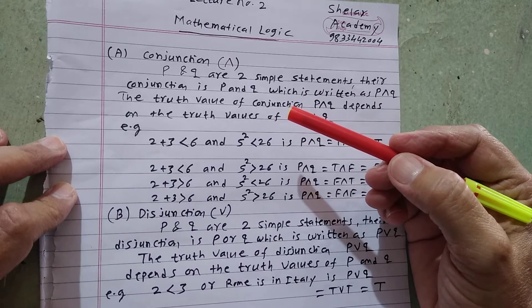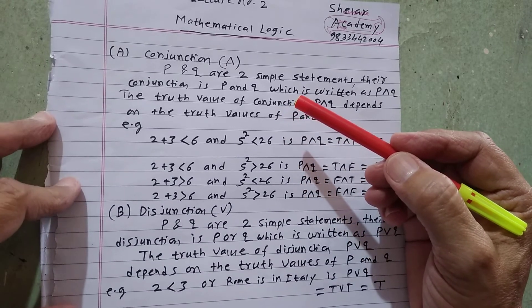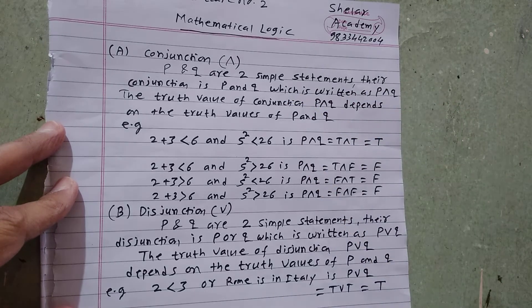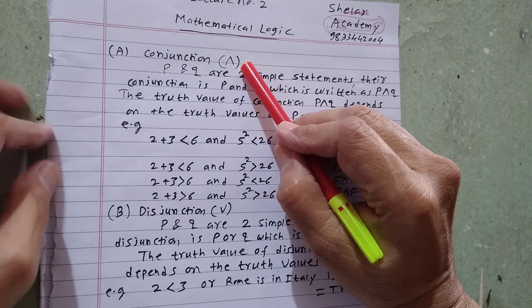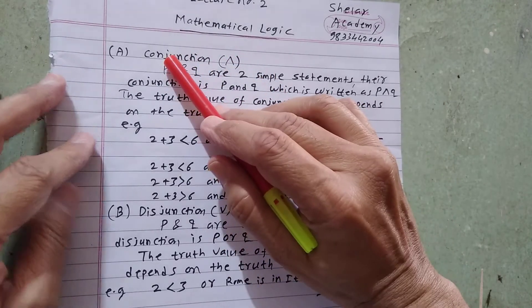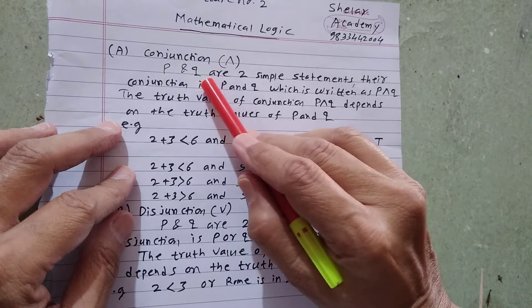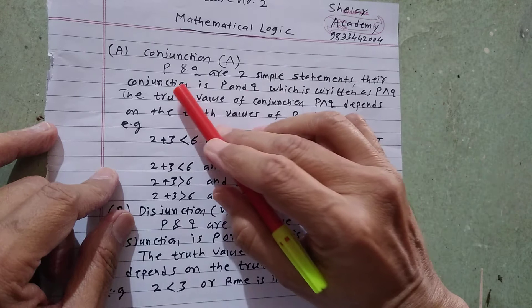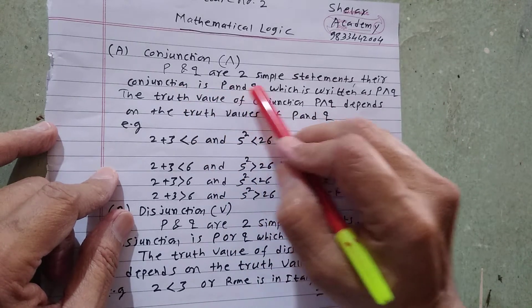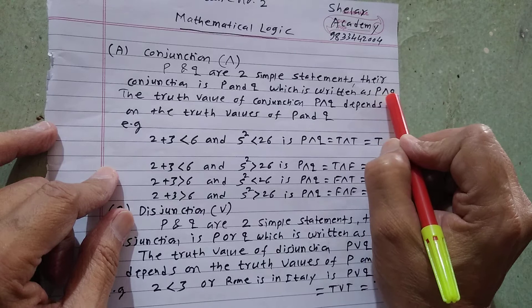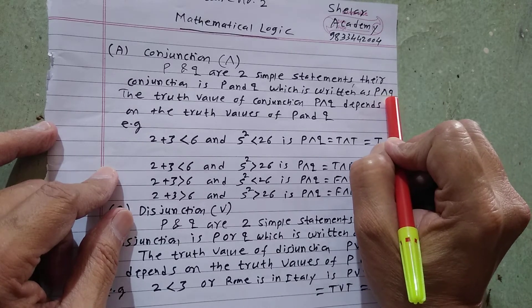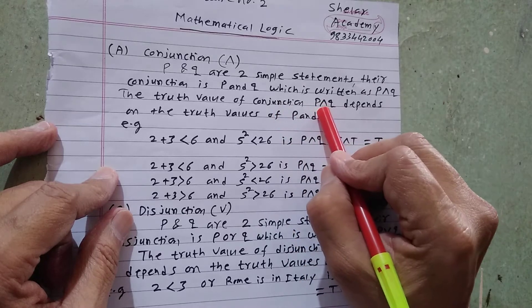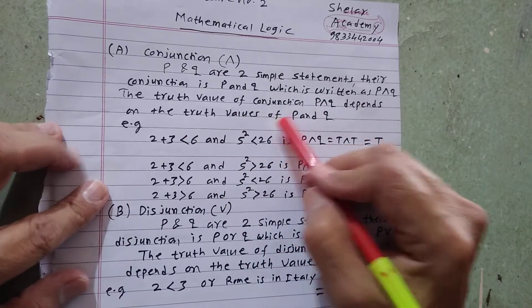Hello students. Once again we will consider the four types of logic statements or logic connectives. The first connective is AND, and the name of the statement is conjunction. P and Q are the two simple statements. Their conjunction is P AND Q, which is written as P inverted-V Q. The truth value of the conjunction P AND Q depends on the truth values of P and Q.